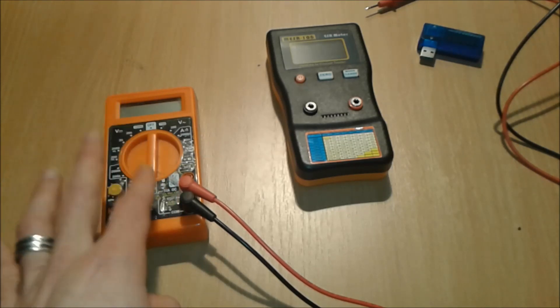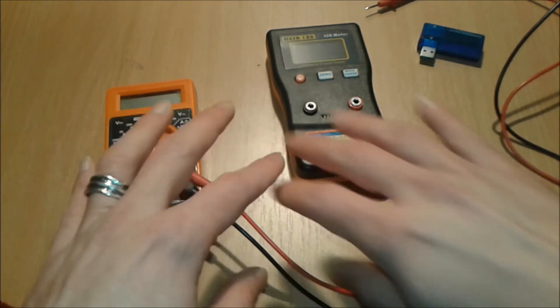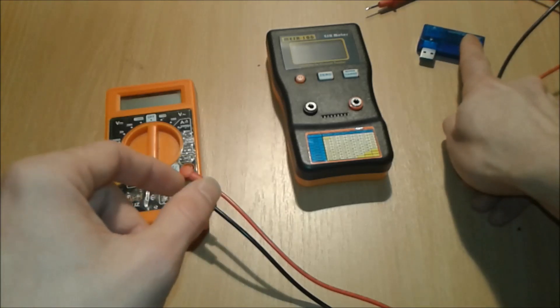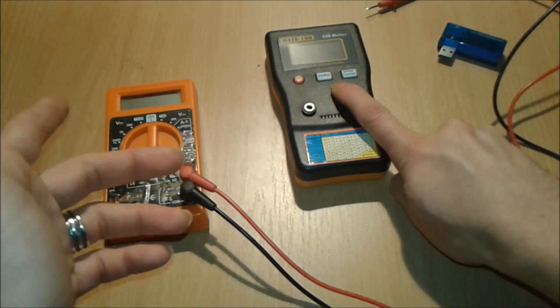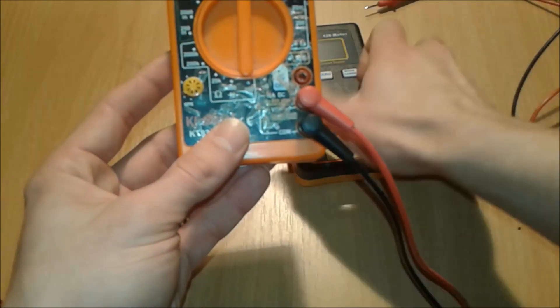All this stuff is meters. This one here is a voltage and current meter, this one is a capacity meter, and this one is our digital multimeter.